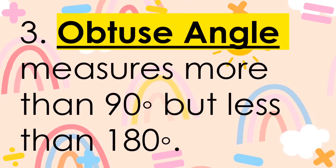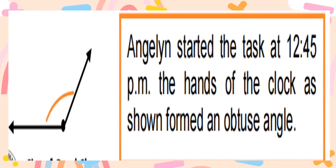The last type is the obtuse angle. When an angle measures more than 90 degrees but less than 180 degrees, we call that an obtuse angle. Angeline started the task at 12 o'clock in the afternoon, and the hands of the clock formed an obtuse angle — greater than 90 degrees but less than 180 degrees.